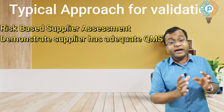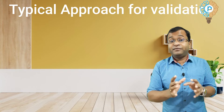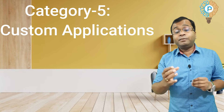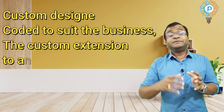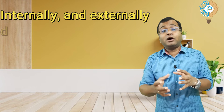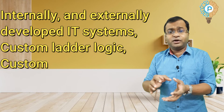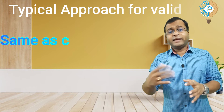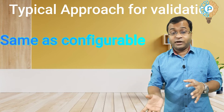Category 5 is the custom application. These systems or subsystems are developed to meet specific needs and regulatory compliance. This software is custom-designed and coded to suit the business and may be a custom extension to an existing system, developed internally or externally by an IT team — for example, custom ladder logic or custom firmware. The typical validation approach for Category 5 is the same as Category 4 configured software.